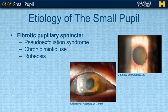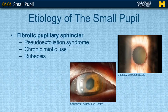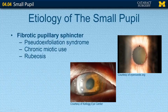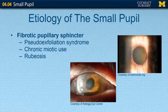There are various causes for a small pupil. The first includes a fibrotic pupillary sphincter. One etiology is pseudoexfoliation syndrome, which on clinical exam looks like dandruff-like material — you can see the whitish fluffy pseudoexfoliation material in this photograph. When the pupil is dilated, you can see an almost target-like appearance on the lens capsule where the iris tissue rubs against the lens.